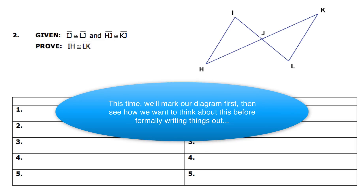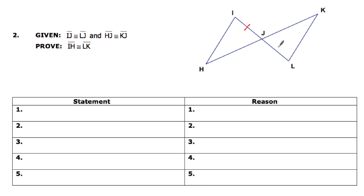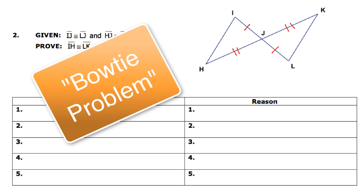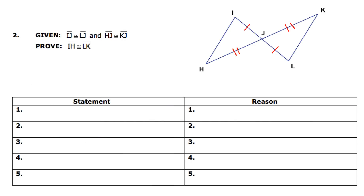Now let's take a look at example two. We're going to mark our information on our diagram first. IJ is congruent to LJ, and HJ is congruent to KJ. Now this kind of problem I like to call the bow tie problem because it looks like a bow tie. Anytime you've got this shape, the angle right here and the angle right here are both going to be congruent because they're vertical angles. If you recognize that right off the bat, you're golden. That's a pattern to really look for anytime you have figures like this.